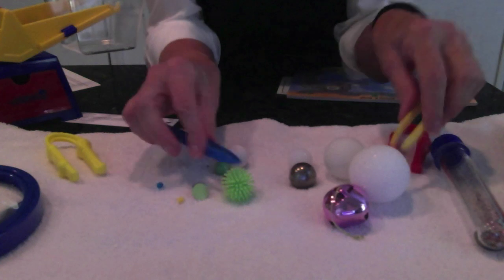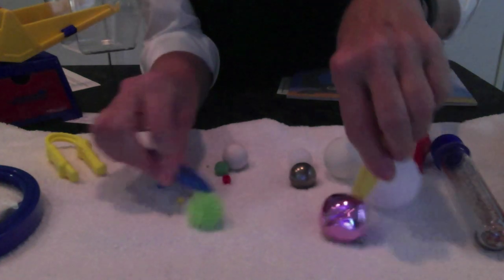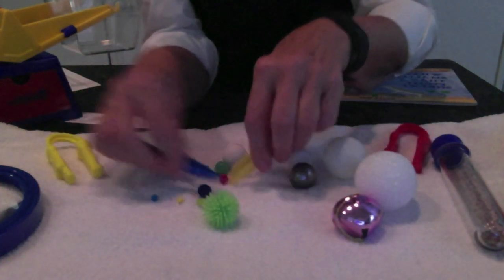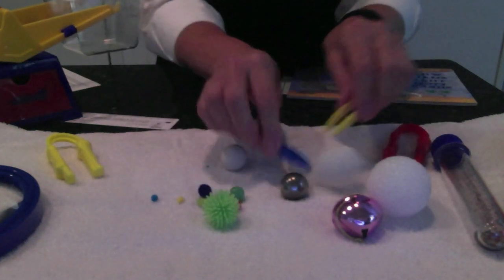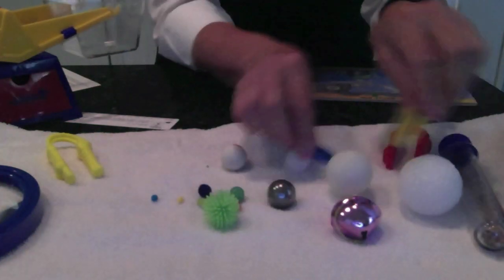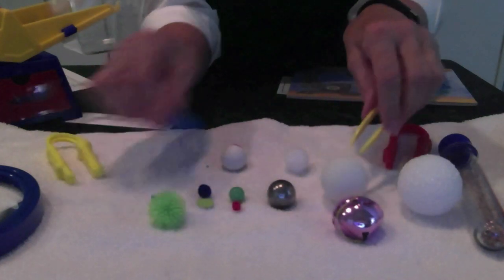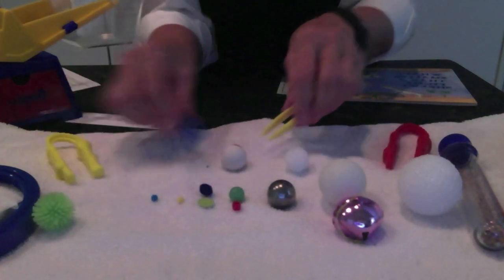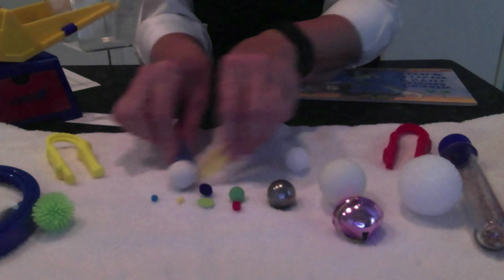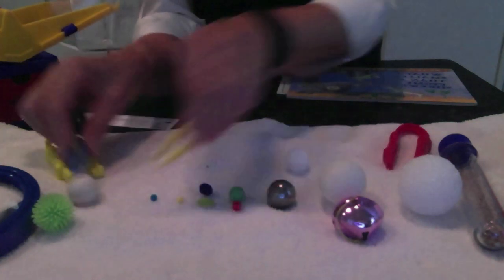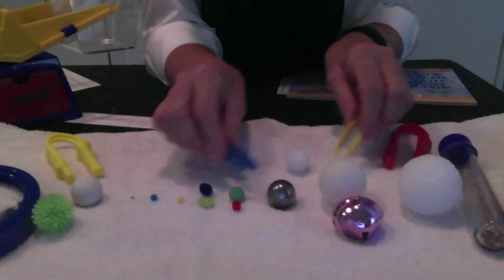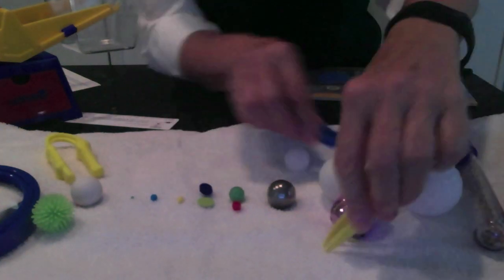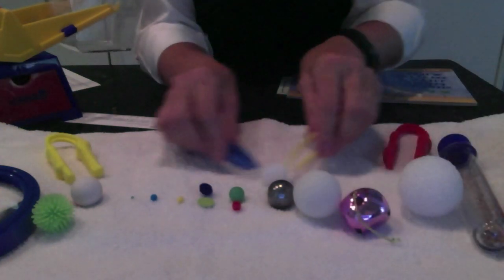But you might want to just roll them around, count them at first. Look at all the different sizes, shapes, textures, colors. These are all the things that we're always trying to get students to observe and discuss with us. So if we decide to line these up, smallest to largest, we might want to do it several times and let everybody have a chance.